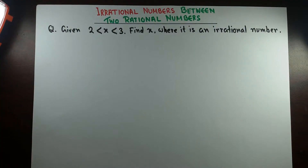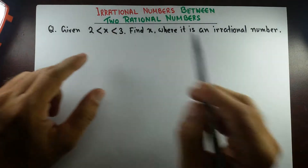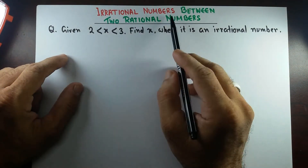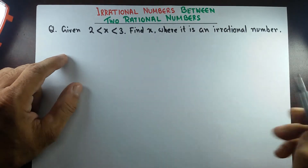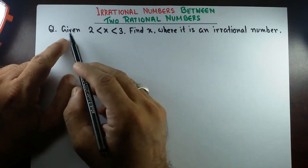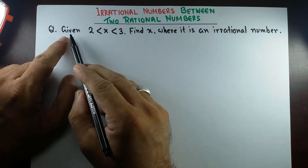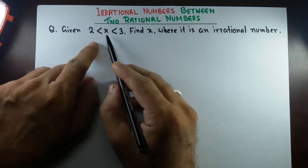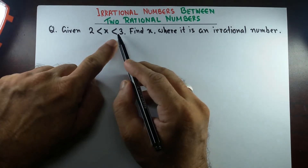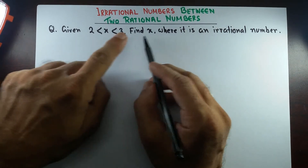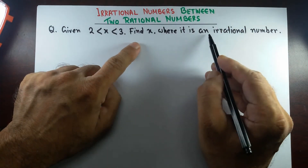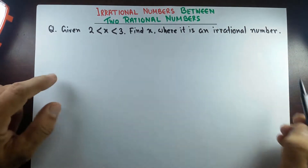Good morning. Today, I'll talk to you about irrational numbers between two rational numbers. The question is, given x is greater than 2 but less than 3, find x where x is an irrational number.